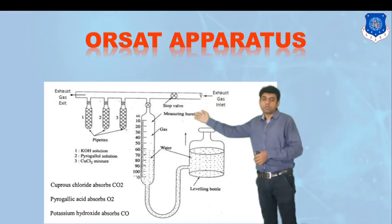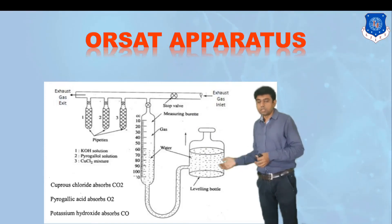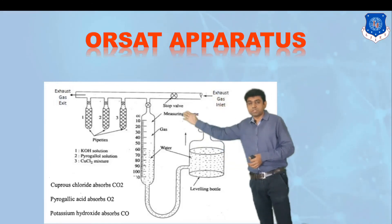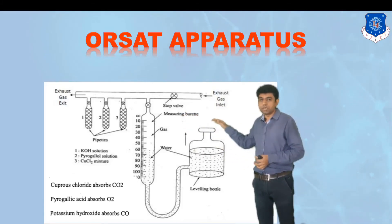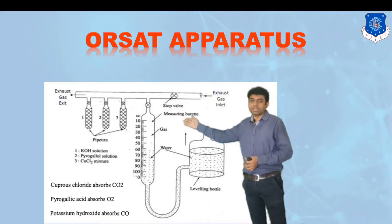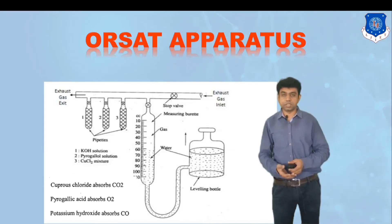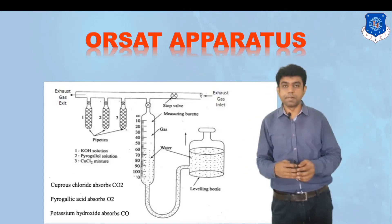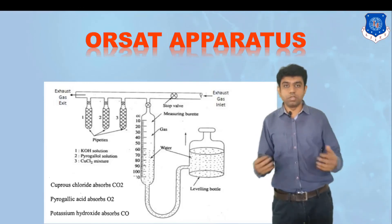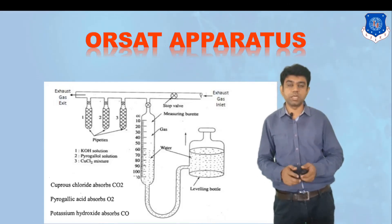Valve number two and one are closed, and valve number three is opened, which contains a potassium hydroxide solution. This solution has the tendency to absorb carbon monoxide. The water bottle is raised so the gases pass into the third pipette, which absorbs the carbon monoxide. When the water bottle is lowered, the gases return to the measuring burette, now indicating 50 cc instead of 70 cc. The 20 cc difference is the volume of carbon monoxide present in the gas. The remaining 50 cc is the mixture of other gases. Through this technique we can easily measure CO, CO₂, and O₂ in the exhaust gas.